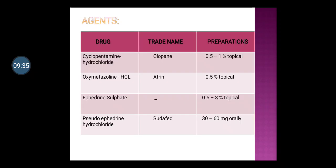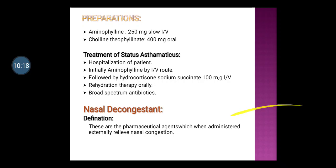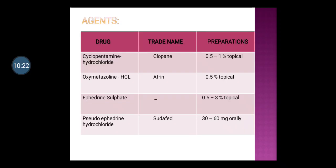Nasal decongestant agents: First, cyclopentamine hydrochloride, trade name Clopane, preparation 0.5 to 1 percent topically. Second, oxymetazoline hydrochloride, trade name Afrin, preparation 0.5 percent by topical route. Third, ephedrine sulfate, no trade name listed, preparation 0.5 to 3 percent by topical route. Fourth, pseudoephedrine hydrochloride, trade name Sudafed, preparation 30 to 60 mg by oral route.